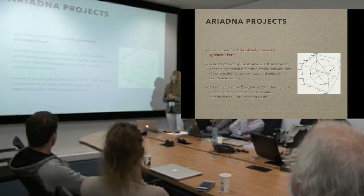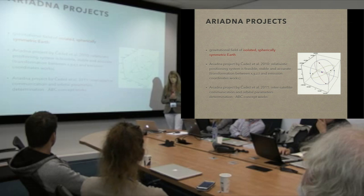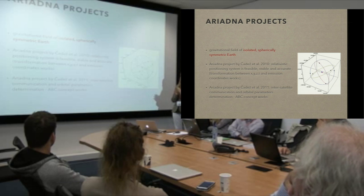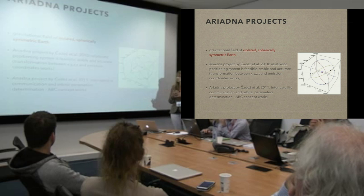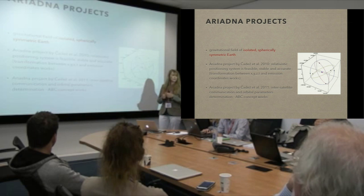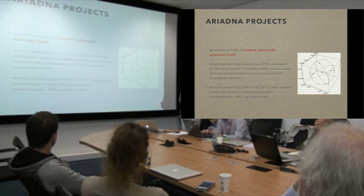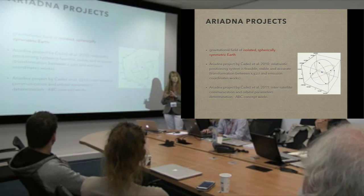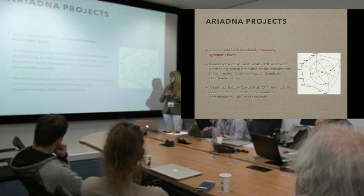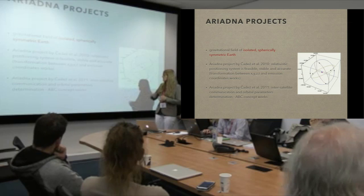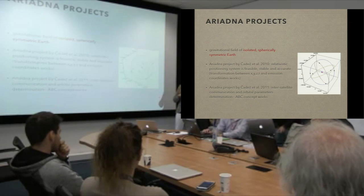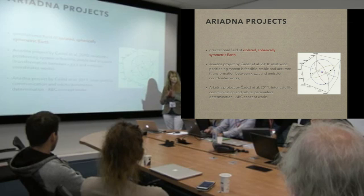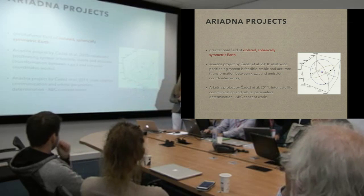As mentioned earlier, this idea was first developed further in the ARIADNA project. There were two projects in which the gravitational field around the Earth — the space-time around an isolated, spherically symmetric Earth — was considered. In the first ARIADNA project it was shown that this relativistic positioning system works, with no limitation in accuracy when transforming from normal x, y, z to proper emission coordinates. In the next ARIADNA project it was shown that the simulated inter-satellite communication and orbital parameter determination from pairs of proper times also works — the ABC concept was validated.